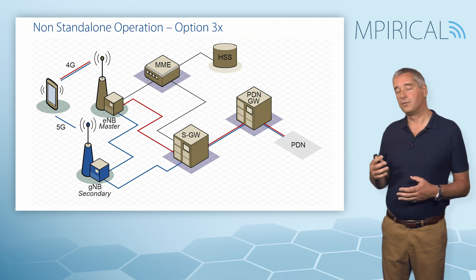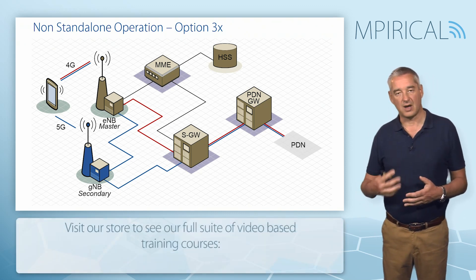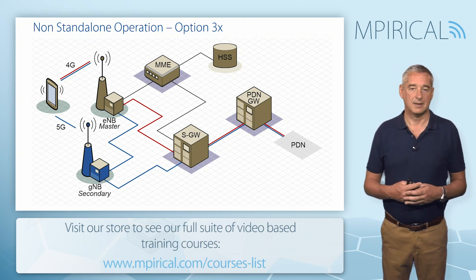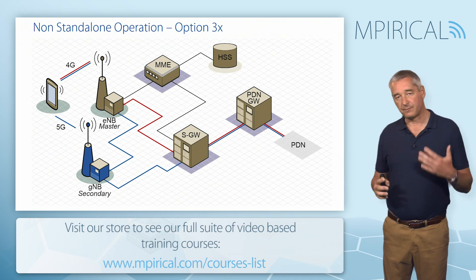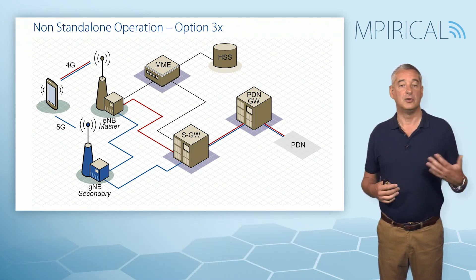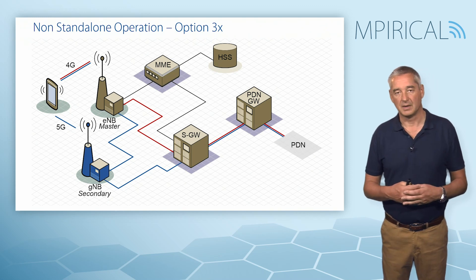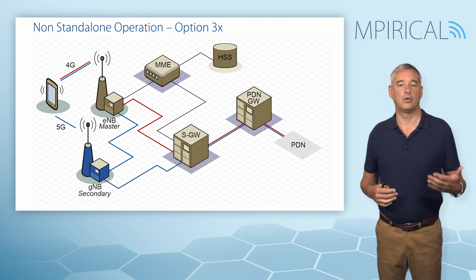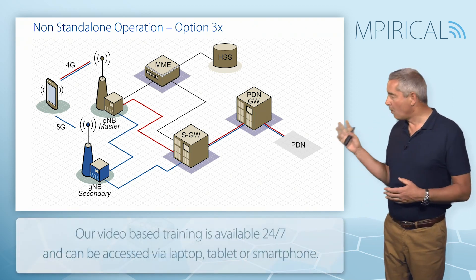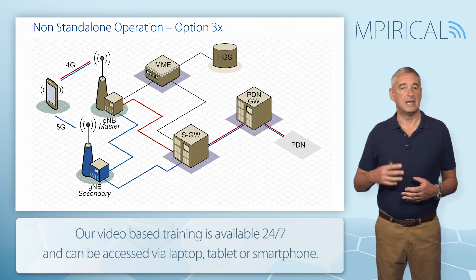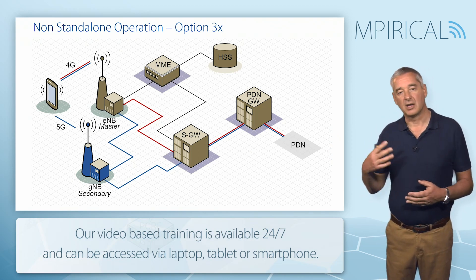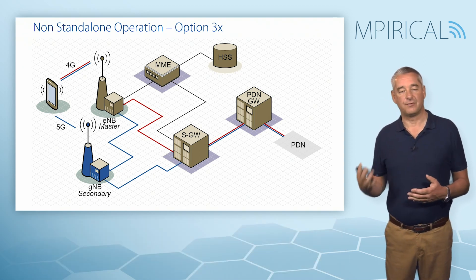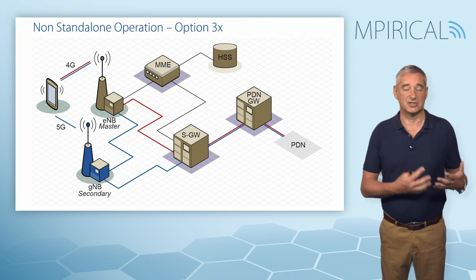With option 3x, we also support a secondary data flow — illustrated in blue. Coming from the packet data network through the PDN gateway down to the serving gateway, the data will then flow down to the gNodeB, the 5G radio node. Here the traffic will be split, with a proportion sent across the 5G radio air interface down to our device — capable of supporting both radio links — while the remaining data is sent up towards the eNodeB and across the 4G radio link. Adding the gNodeB fundamentally gives us a capacity boost, enabling the device to go into dual connectivity mode.